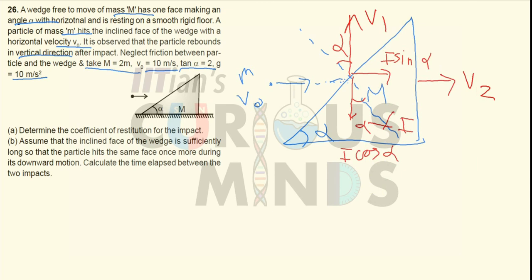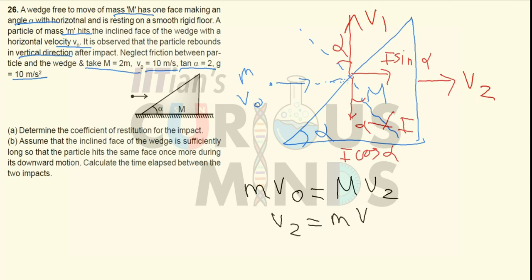Using conservation of momentum in the horizontal direction: the horizontal impulse I·sin(α) acts equally and oppositely on both bodies, so mV0 = M·V2. Therefore V2 = mV0 / M. Let this be the first equation.